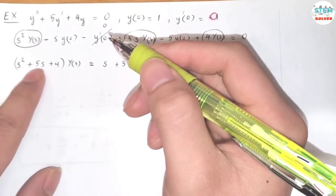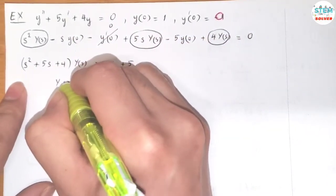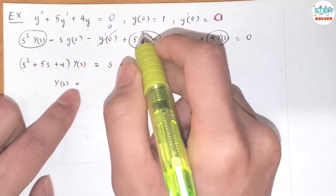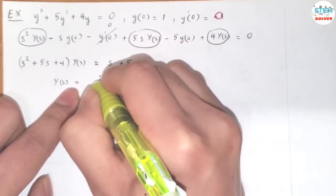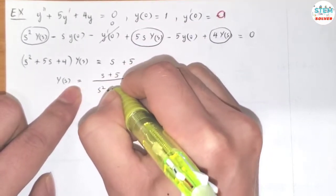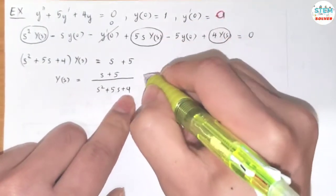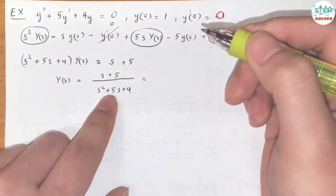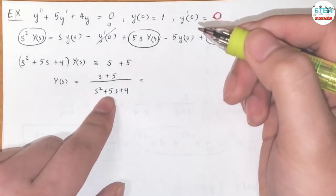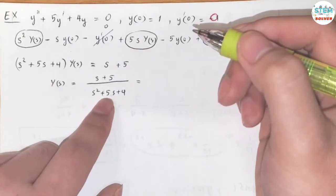Now I'm going to divide by s² + 5s + 4 on both sides to get capital Y(s) itself. On this side I have (s + 5) over (s² + 5s + 4). We cannot find the inverse Laplace of this, so we need to write it in factored form.